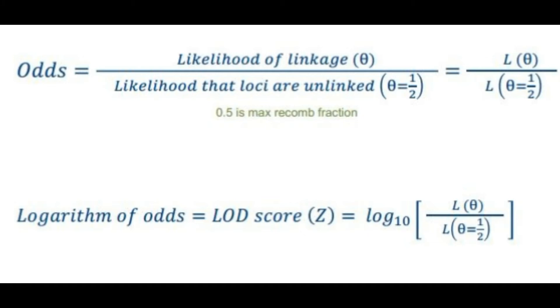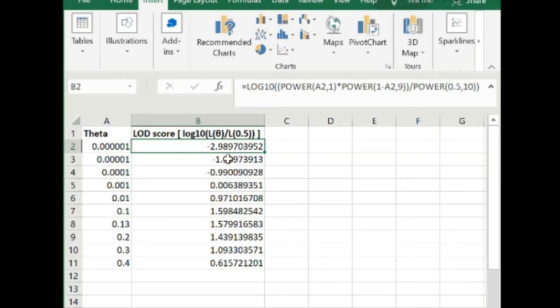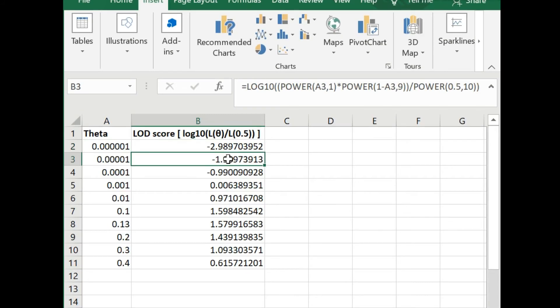In the Excel file I have created a simple formula which uses the enveloping log10, where the numerator is given by the power function and the denominator is also given by the power function. Here we know the value of theta is 0.5 in the denominator. In the numerator we give multiple values of theta to generate a multitude of LOD score values which we can later analyze.